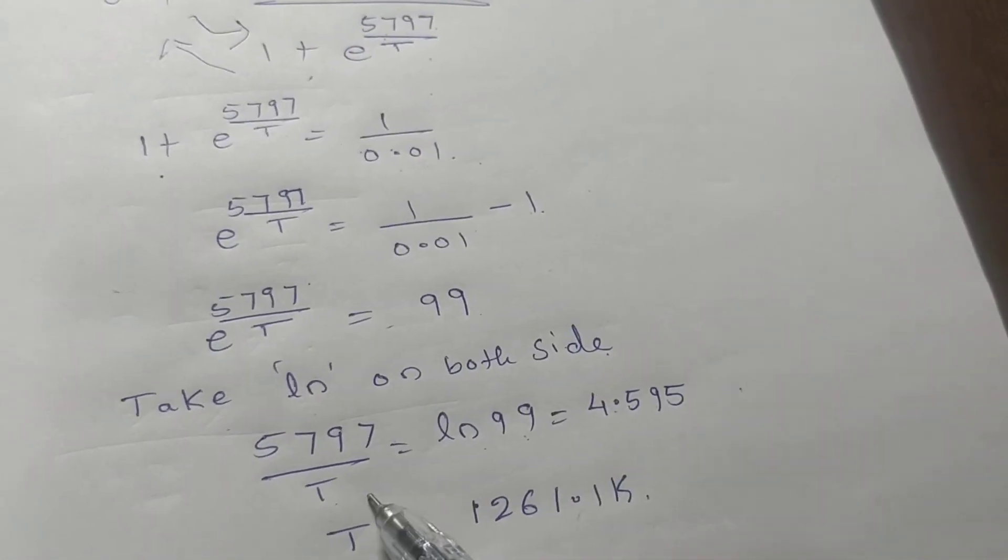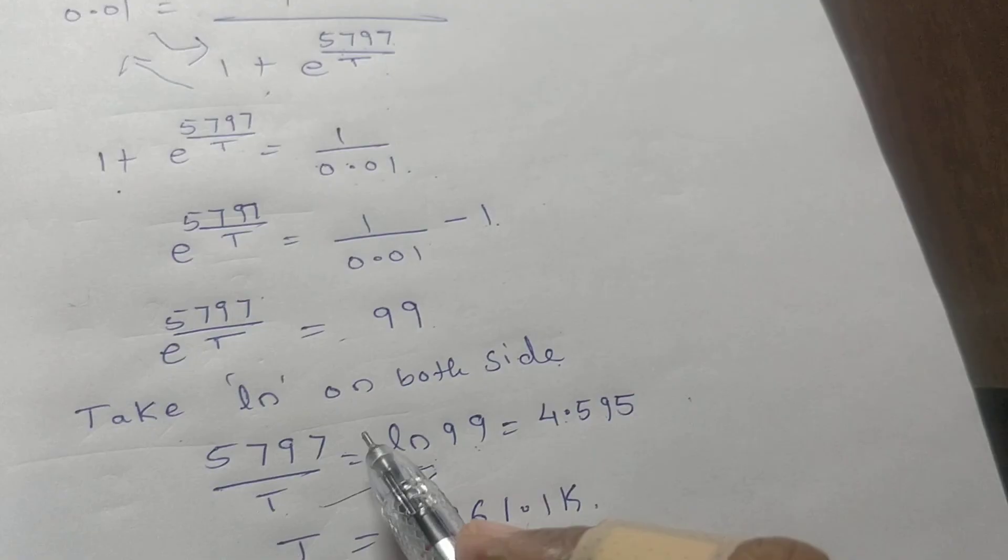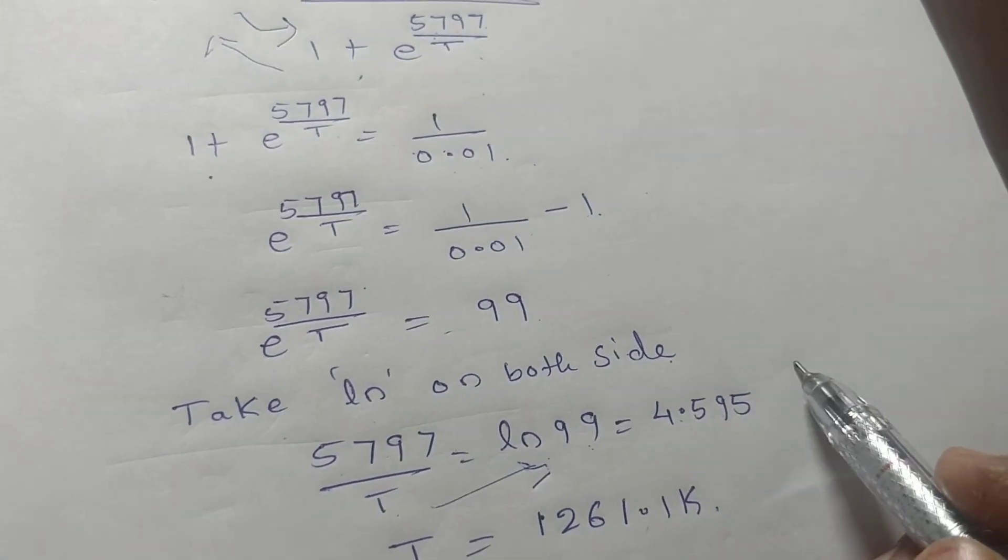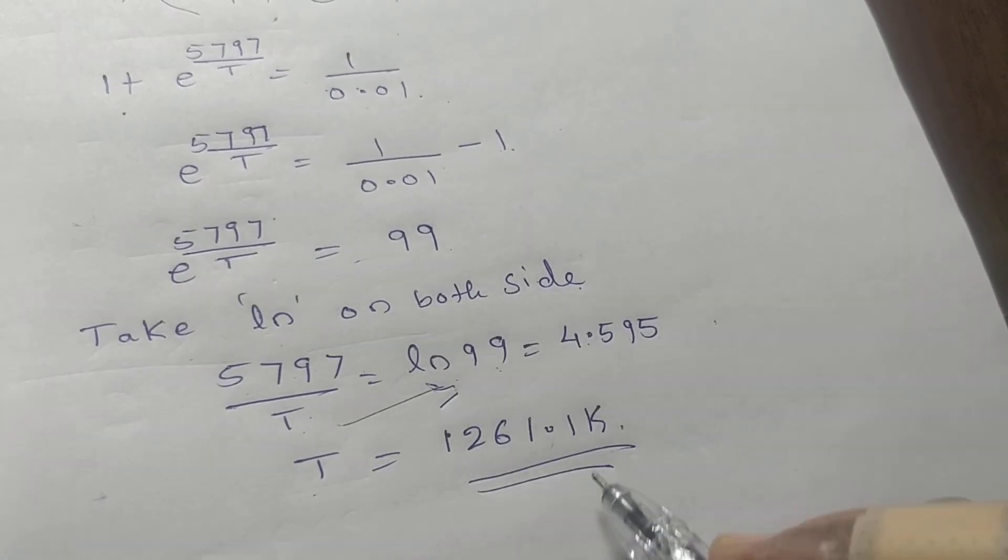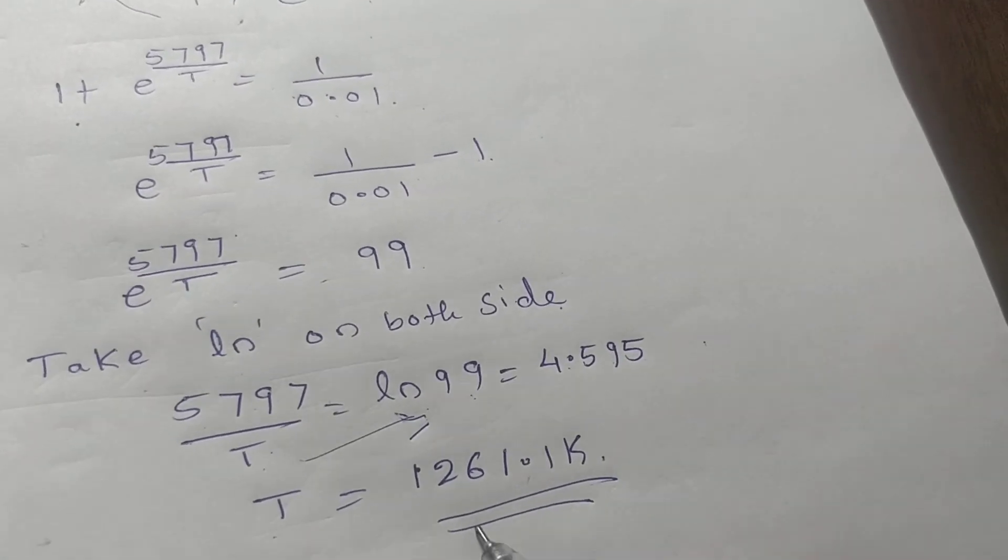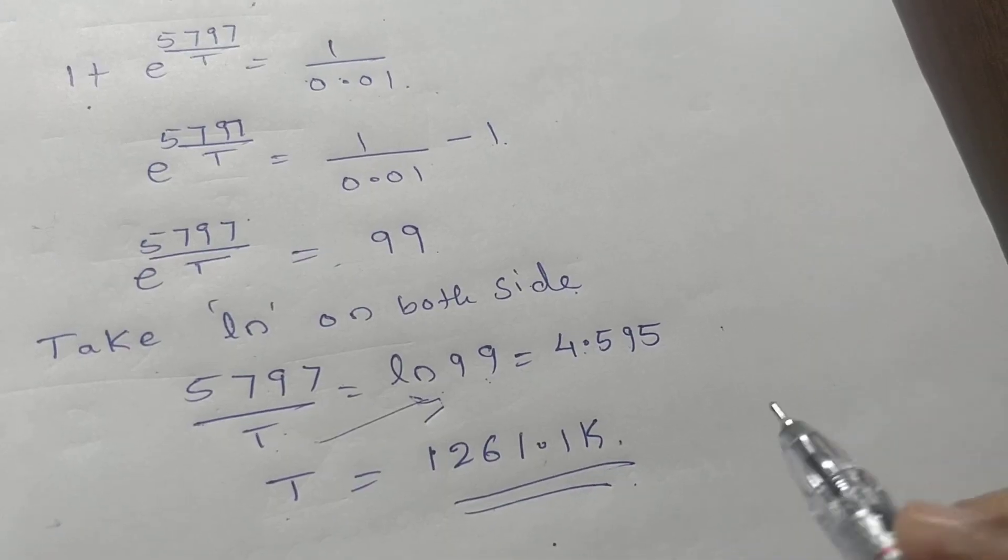So when you take T here, what you'll get: 5797 divided by 4.595. So T value will be 1261.16 kelvin.